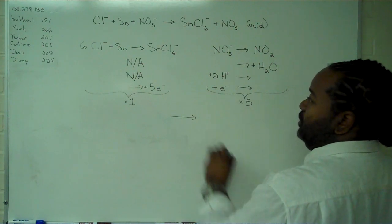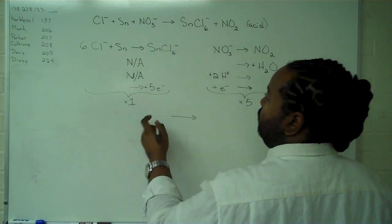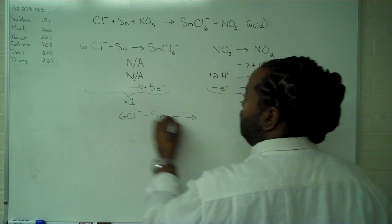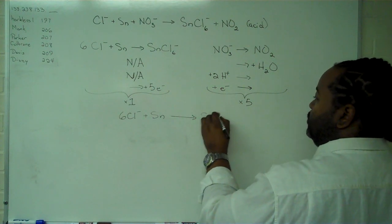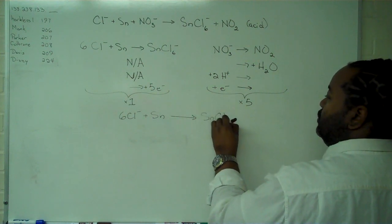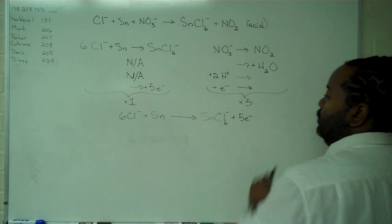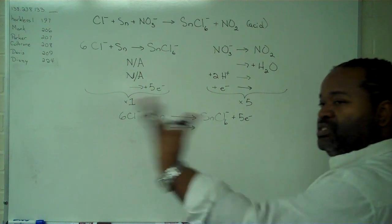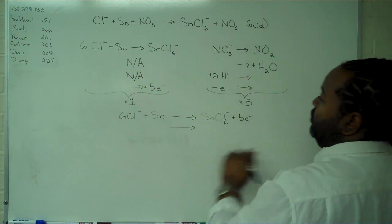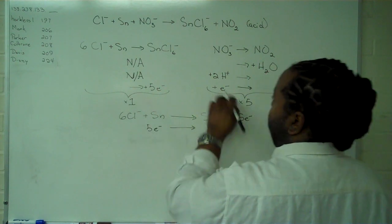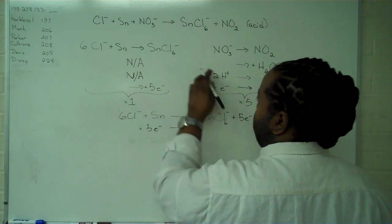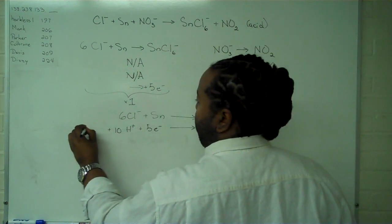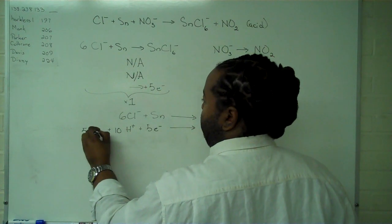So the last thing we have to do is write everything out. So I'll do this one first. Now I find from a visual perspective, it's useful to center everything around the yield arrow so that it's very definitive which side you have your reactants and which side you have your products. So here we have five electrons, we're going to have ten hydrogen ions, and five copies of our NO3 minus.